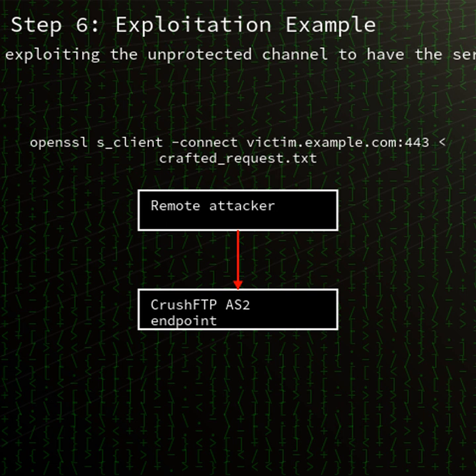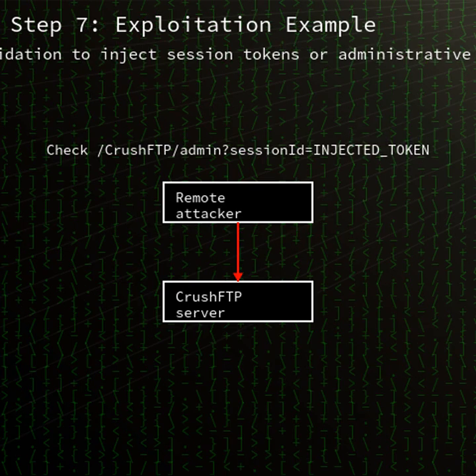An attacker crafts a specially formed HTTPS request that exploits the unprotected alternate channel, bypasses AS2 signature and certificate checks, and gains admin-level privileges.